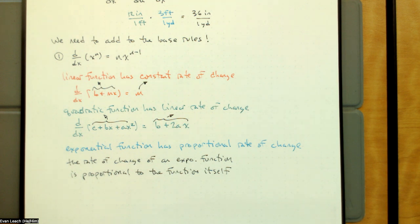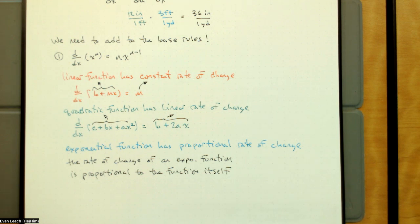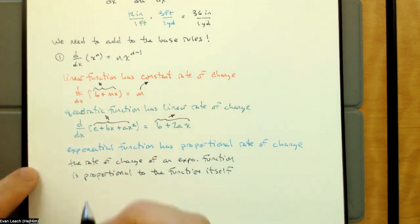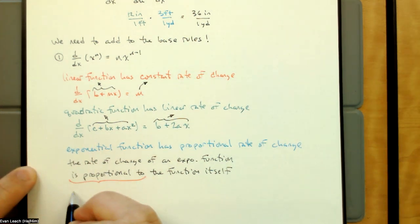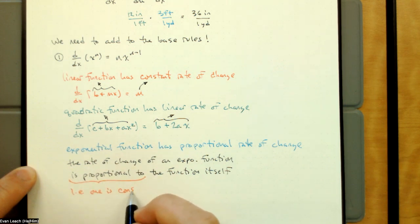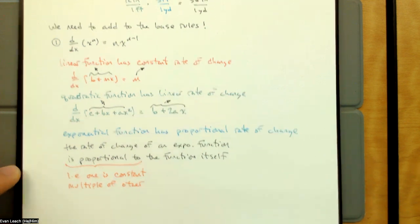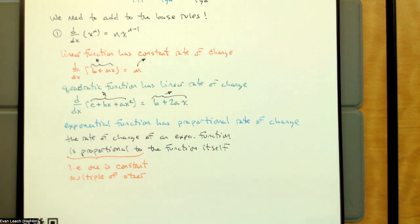The rate of change of an exponential function is proportional to the function. Proportional means it's a constant multiple of — that's what a proportion is. If two things are proportional, one is a constant multiple of the other. I should say directly proportional, but that's the assumed default. If I want them to be inversely proportional, I have to state that.